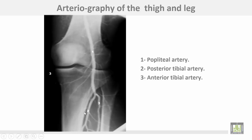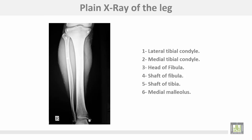This is arteriography of the thigh and the leg, with radio-opaque material in the popliteal artery. This shows the popliteal artery, the posterior tibial artery, and the anterior tibial artery — the two terminal branches of the popliteal artery.